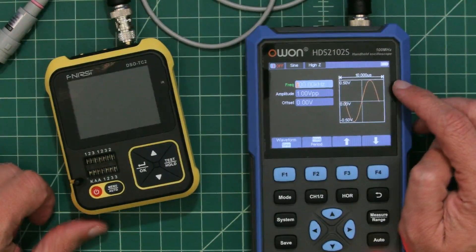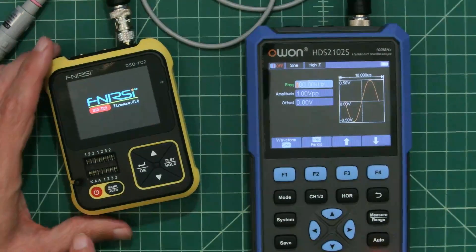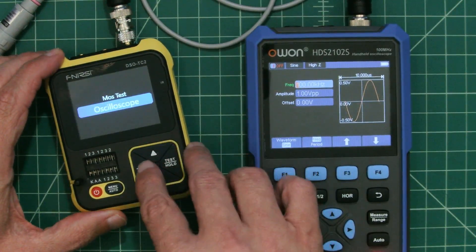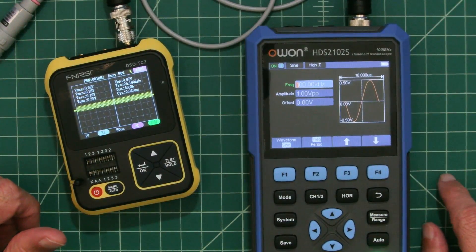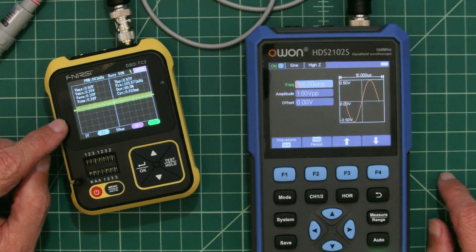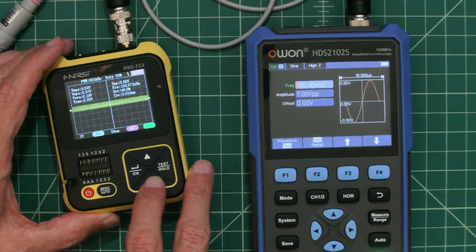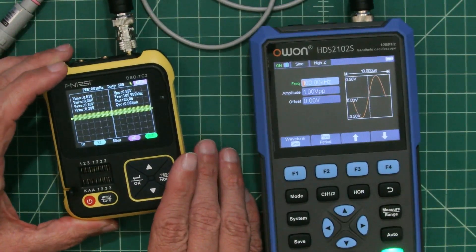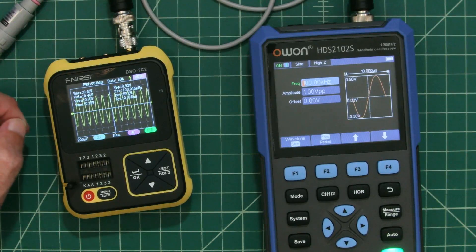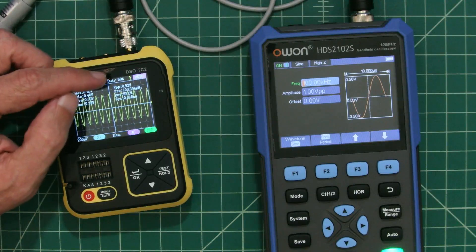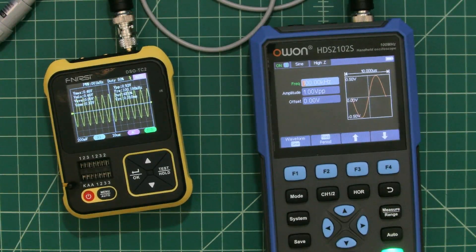Here we have the OWAN HDS-2102S. It's a signal generator oscilloscope multimeter that we like to play around with on the channel. Let me turn this back on and we are going to do some messing with the oscilloscope. I have a BNC cable running from one device to the other. I'm going to turn this on. We can see our waveform. It is 100 kHz sine wave with 1 volt peak to peak. Let me see if there's any adjustments that we can make.